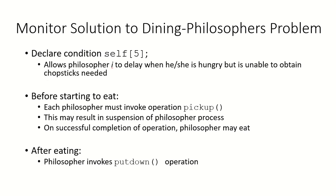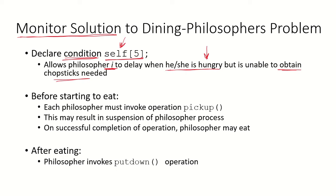Another declaration is the condition variables array, self, of size five, since we have five philosophers. This condition variable allows philosopher i to delay when they are hungry but unable to obtain the required chopsticks. So if a philosopher is hungry but one of the neighbors is eating and they cannot obtain the chopsticks, using this condition variable they can indicate they are hungry but are currently delaying the eating process.